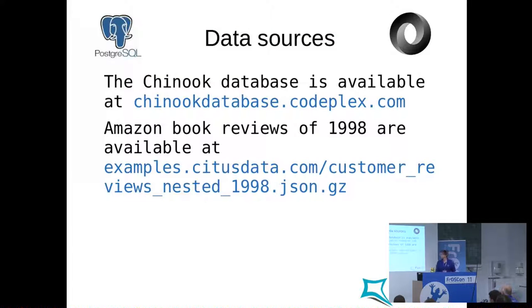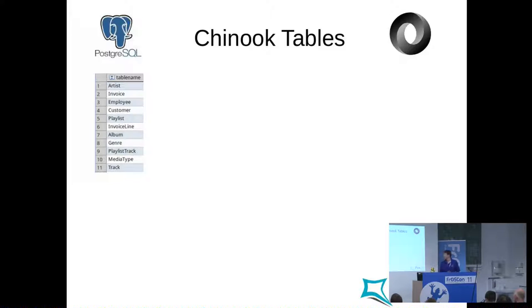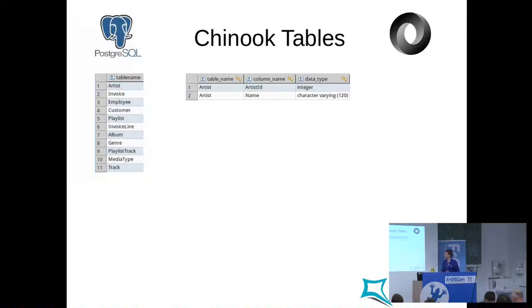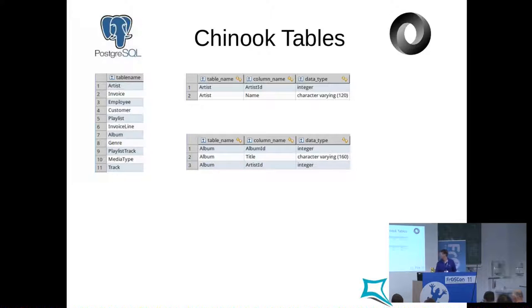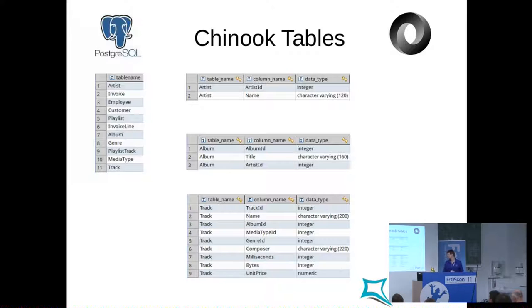What I'll be using later are data sources from the Chinook database, which is available on the web, and some Amazon book reviews — a few years old but available. The Chinook database has several tables; we'll be using artist, which has only two columns, plus album and tracks. It's a music database, as you might have guessed. We'll use this to see what's possible working with relational data and JSON.